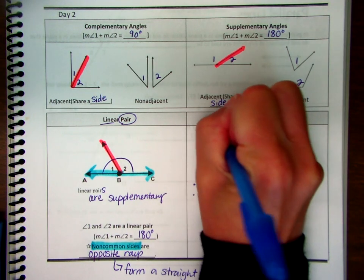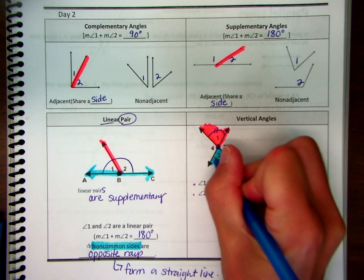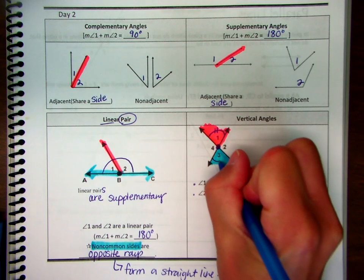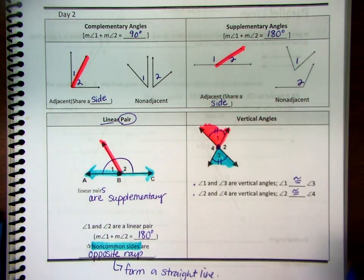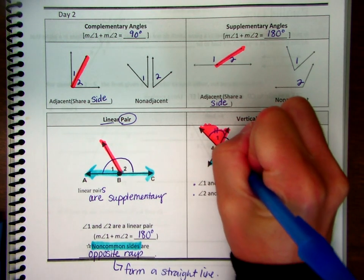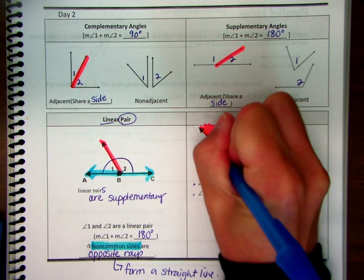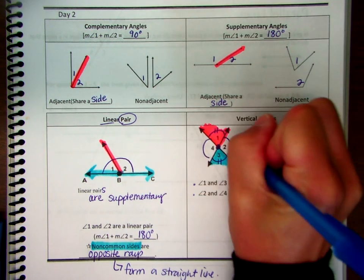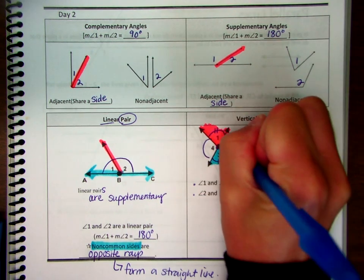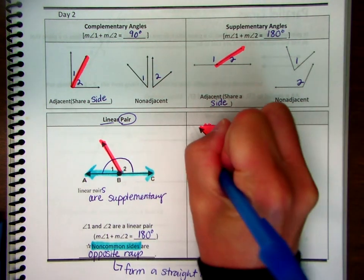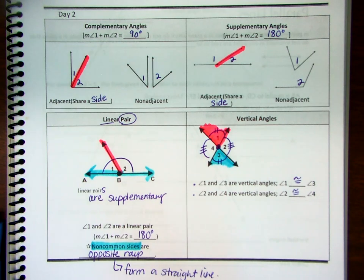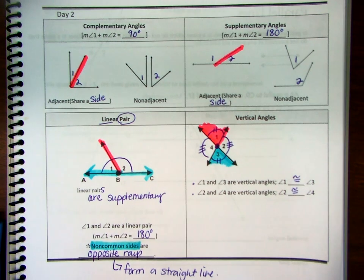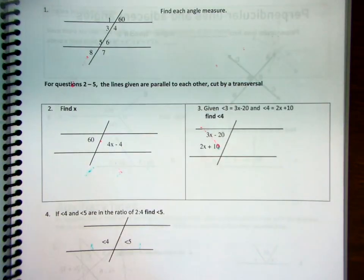The angles that were not shaded are also congruent. Let's note that with symbols: angle one — I'll use two tick marks — is congruent to angle three. And then angles two and four, I'll use three tick marks.